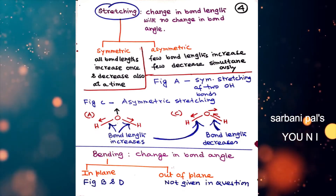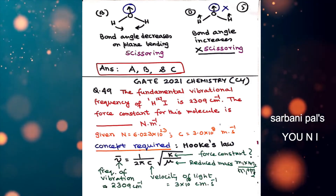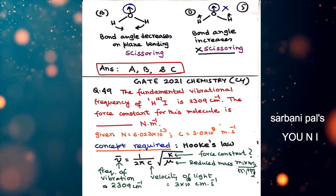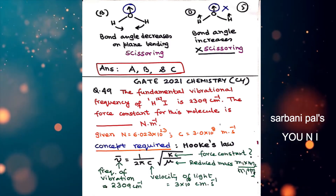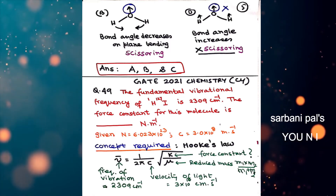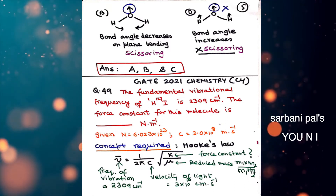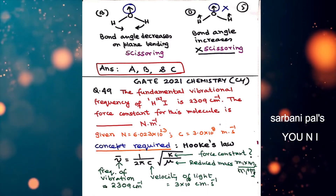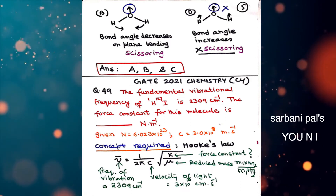Bendings are of two types: in-plane bending and out-of-plane bending. Figure B represents correctly the in-plane bending — if the two hydrogens of water come close, then oxygen should go up, which is presented in figure B. In figure D, if two hydrogens go up, oxygen should come down; but figure D shows hydrogen and oxygen all three atoms moving up, which is not possible. So the correct answer is A, B, and C — D is excluded.